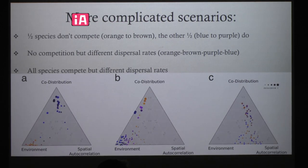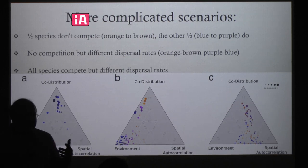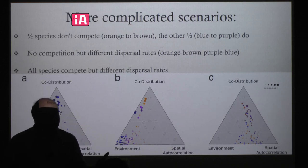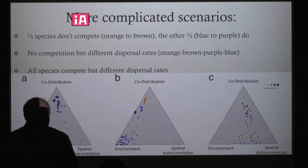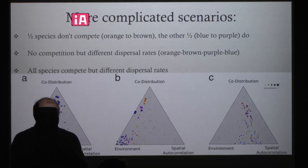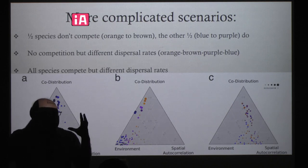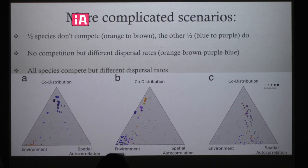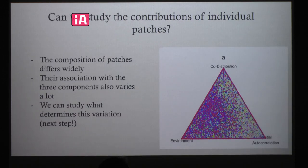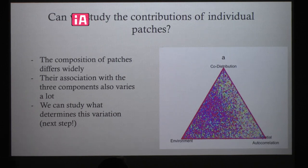For a metacommunity ecologist, this is pretty nice — we've got a new probe that helps us understand that some species might be playing one role whereas others are playing a different role. But the real aspiration for a metacommunity ecologist is to say which patches are also contributing to these patterns. Is a highly isolated patch likely to play a different role than a patch at the center of the metacommunity? Are crowded parts of the metacommunity different than sparse parts? To do that, it would be nice to do the same thing from the patch perspective.